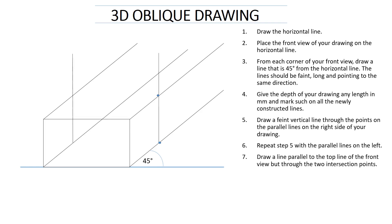Let's go to step number seven. It says draw a line parallel to the top line of the front view but through the two intersections. An intersection is where the two lines meet or cross each other. So you go to those intersections above the top of your front view and draw a line through them. That line should be parallel to the top line of your front view — going through the two intersections but parallel to the top line.